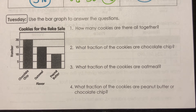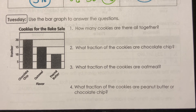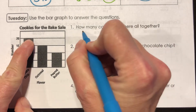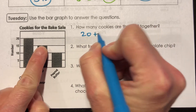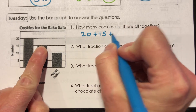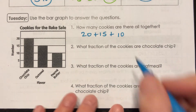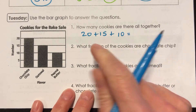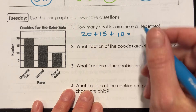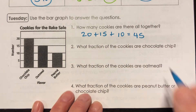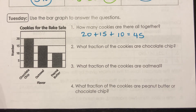Number one: how many cookies are there altogether? Looking at the bar graph, chocolate chip has 20, oatmeal has 15, and peanut butter has 10. Altogether means we add those together, so 20 plus 15 is 35, plus 10 is 45.